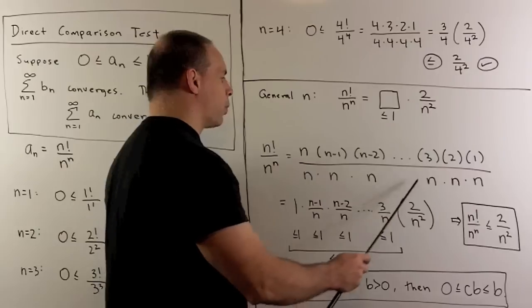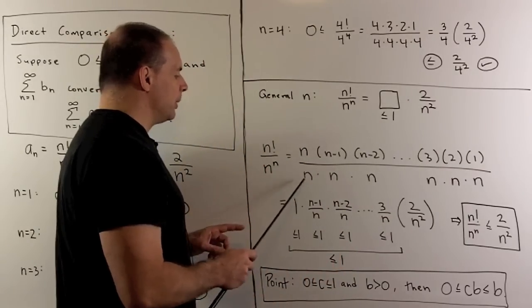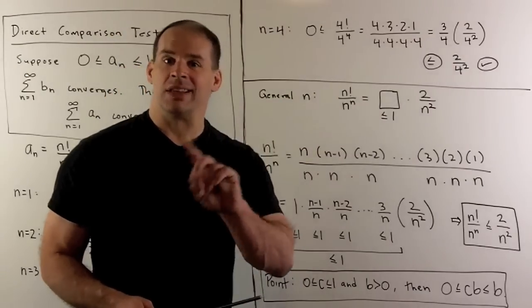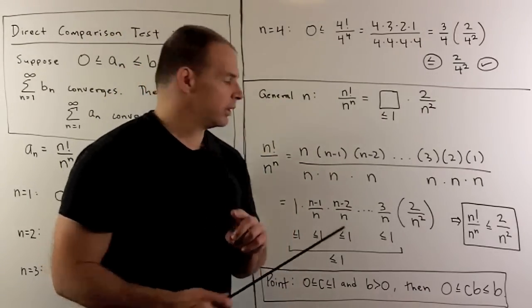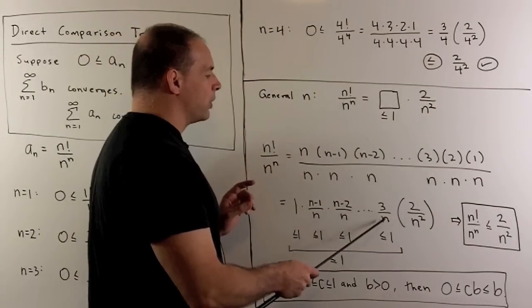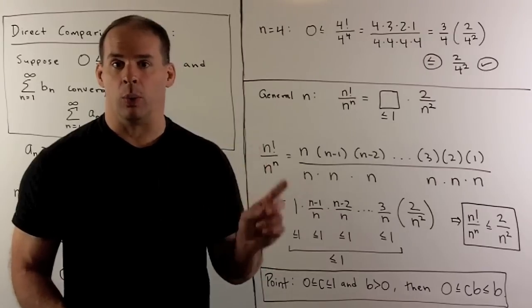If we keep the last two fractions, that'll give us our 2 over n squared. What about everything that comes before it? Well, if you know what's going on here, this term is going to be a 1. This term before it is going to be 1 minus 1 over n, so that's less than 1 but bigger than 0. And we can keep going down all the way until I get to our 3 over n. 3 over n, when n is big enough, is going to be also between 0 and 1.